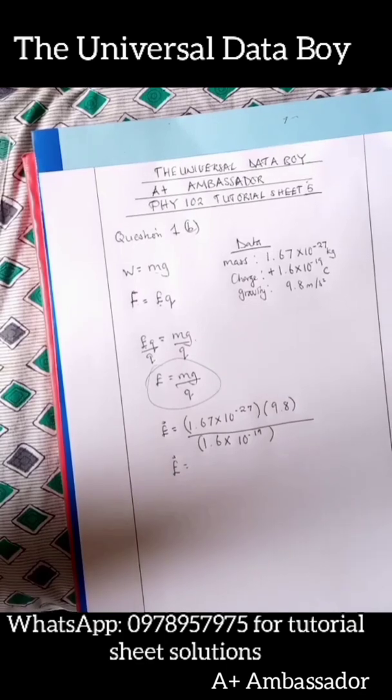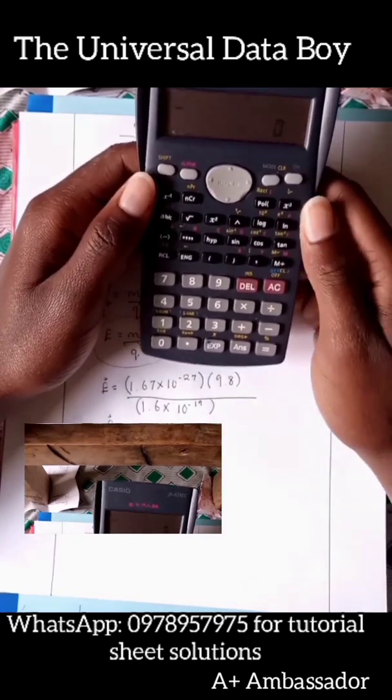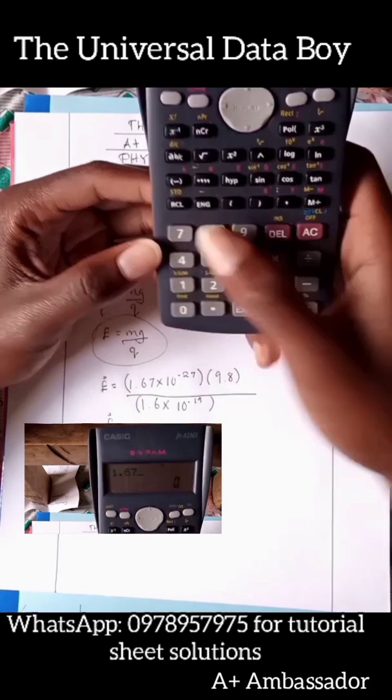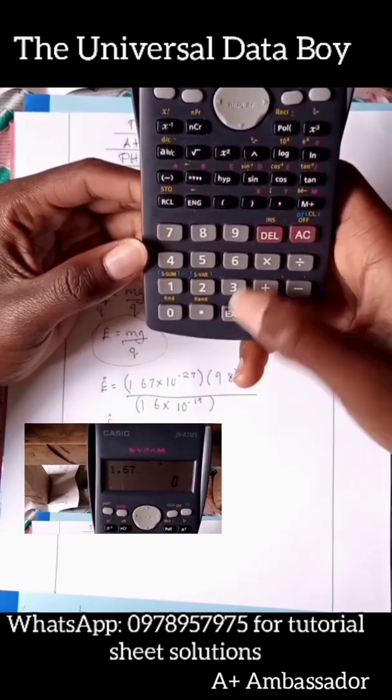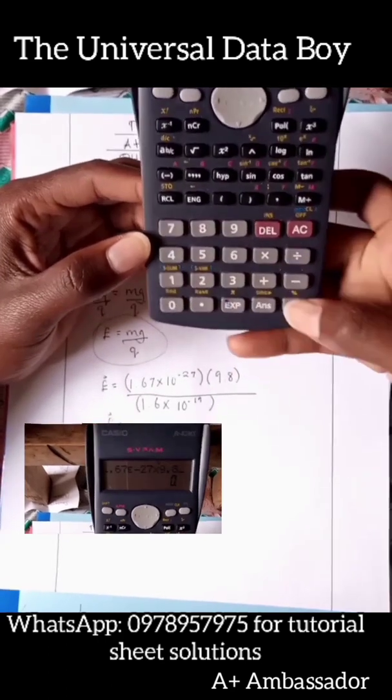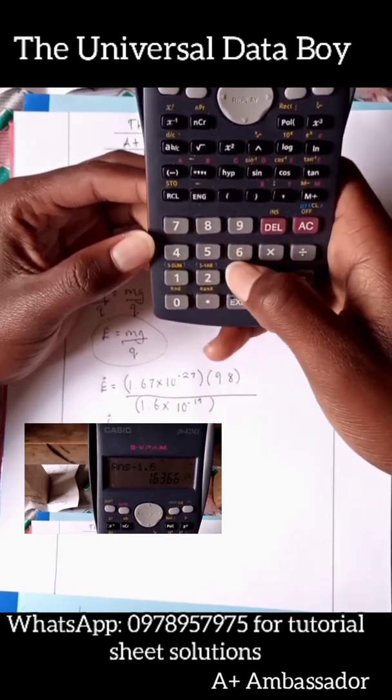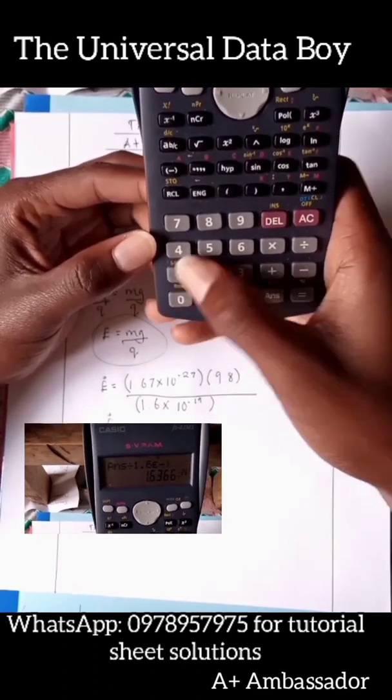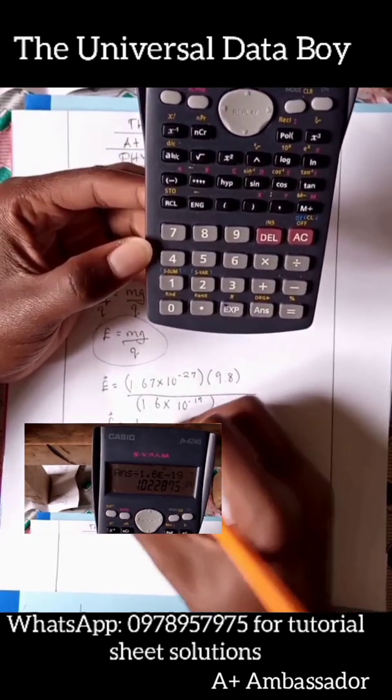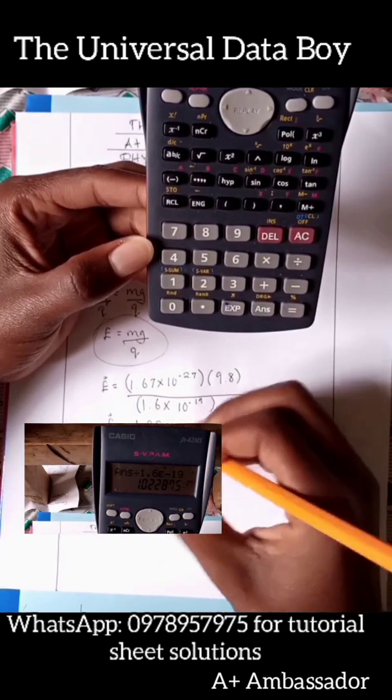So let's get our calculator and then you can plug in these values. So now you get your calculator, you're actually plugging the values 1.67 exponent negative 27 times 9.8 divided by 1.6 exponent negative 19. Then we're having our answer to be 1.02 times 10 to the power negative 7.